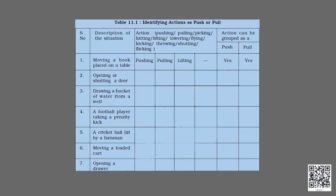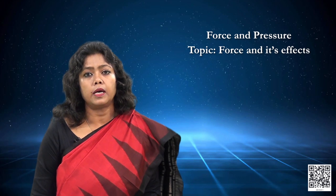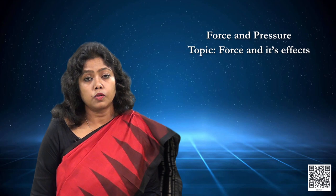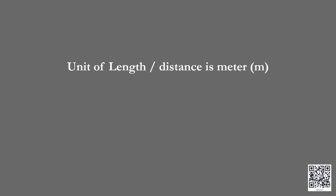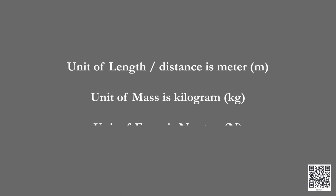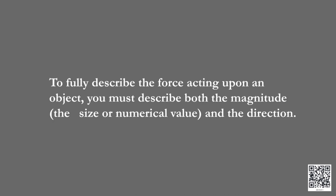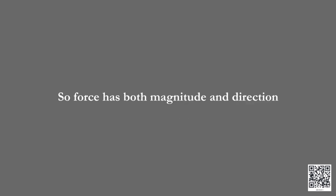Now you can open your textbook and go to table 11.1 to complete the table with your response. As we know, every physical quantity must be associated with a unit. Like the unit of length is metre and the unit of mass is kilogram, the unit of force is called Newton, and its symbol is capital N. To fully describe a force acting on an object, you must describe both the magnitude — that is the size or numerical value — and the direction. So force has both magnitude and direction.